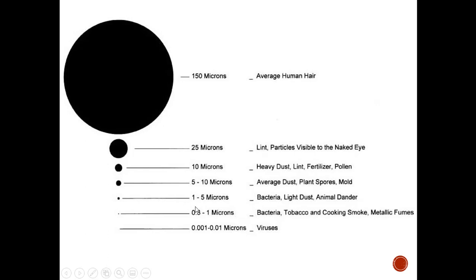Once the droplet lands on the mask, the virus isn't going to wiggle its way through. It stays on the mask. But if that mask isn't there and it lands on your lip or nose, that's a different situation. That's the big misunderstanding people have—just throwing it in since we're talking about microns.